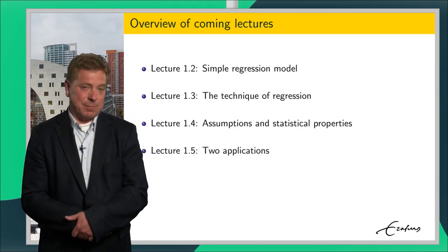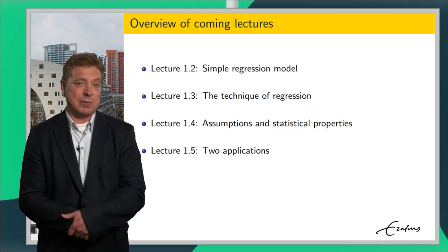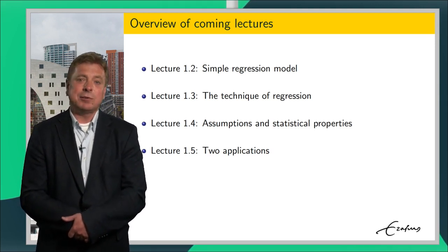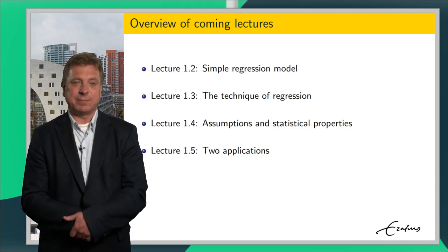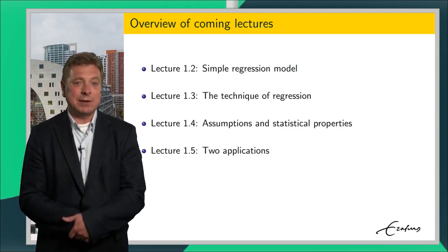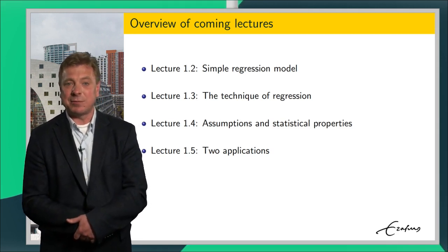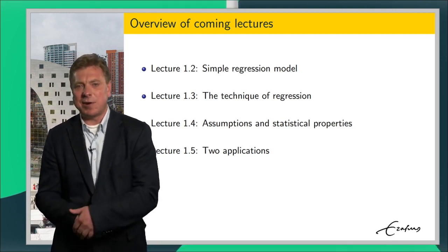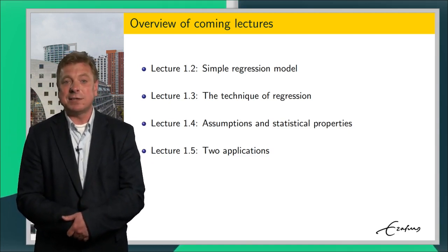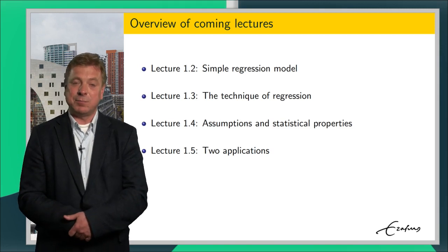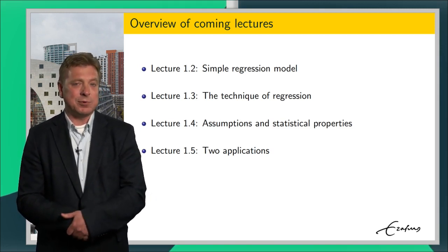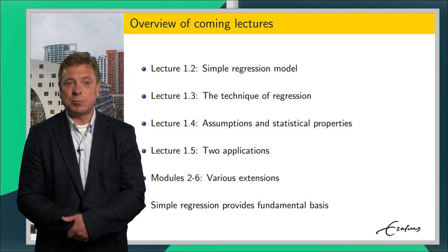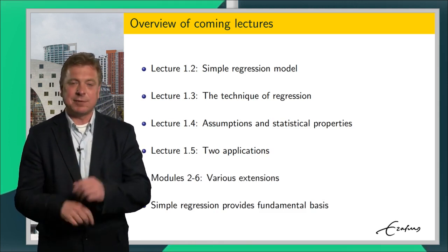There are four more lectures in this set to come. Lecture 1.2 introduces the simple regression model. Lecture 1.3 shows how you can find the regression line from the actual data and how you can evaluate the accuracy of the regression outcomes. In Lecture 1.4 we will examine which statistical assumptions support the use of the simple regression model, and what are the consequences when some of these assumptions are not met. The required modifications provide the motivation for the other lectures of this MOOC, all consisting of extensions of the basic ideas of simple regression. Lecture 1.5 provides some illustrations of the use of simple regression. Modules 2 to 6 provide various extensions, but simple regression provides the fundamental basis.